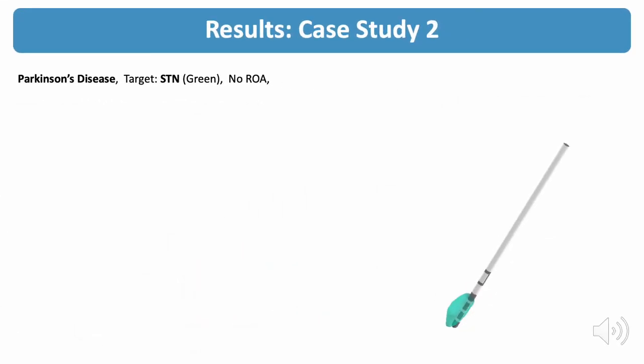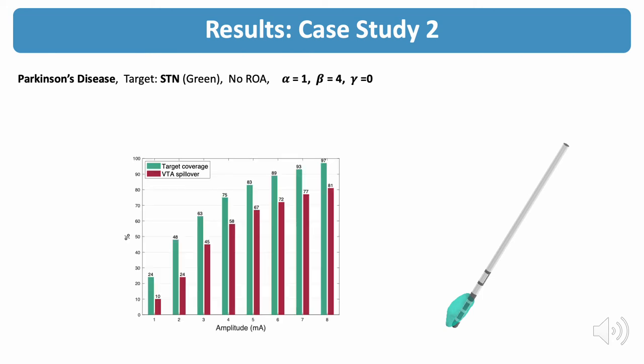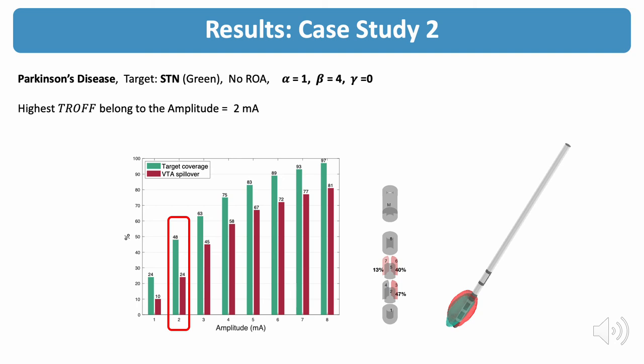In case two, the electrode is not in the middle but at the side of the target. Therefore we set a higher weight for the objective that maximizes the electric field on the target. We repeat a similar procedure for case two. This time the amplitude of 2 mA has the highest trade-off value, and here you can see the results we get for the contact configuration for 2 mA.